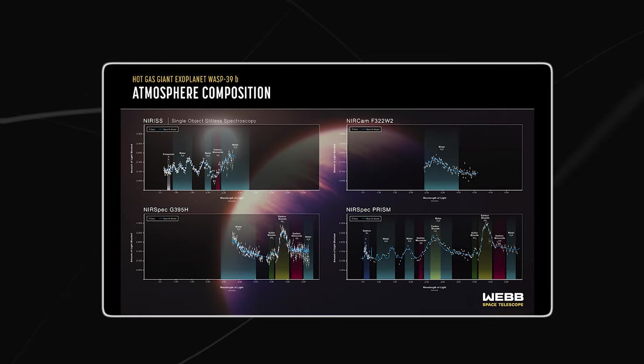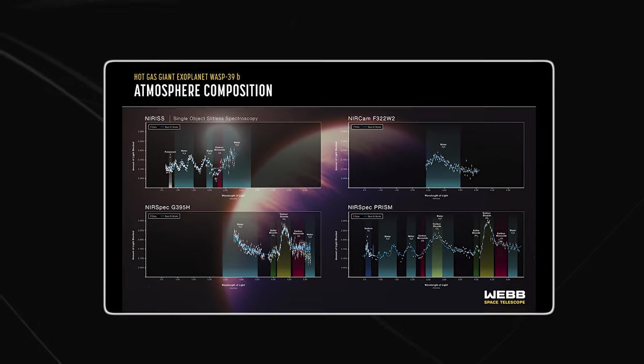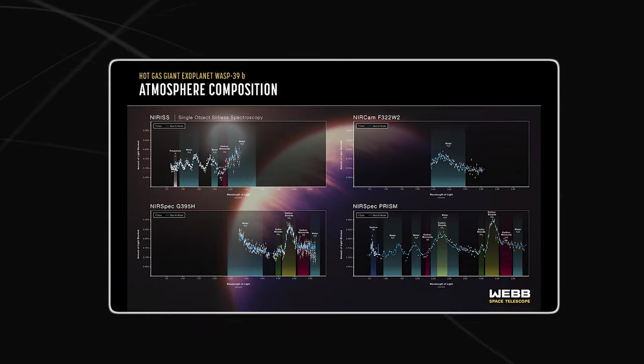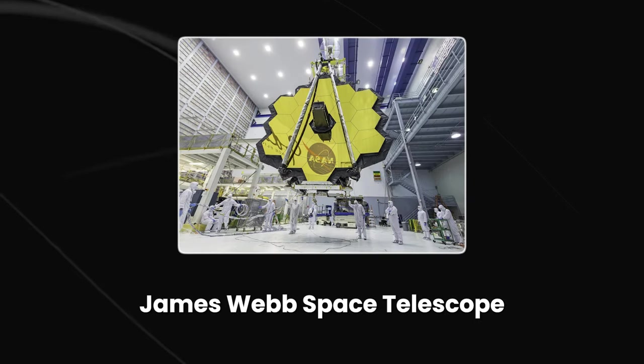AI is also being used to process large amounts of data from ground-based telescopes and space-based telescopes, such as the James Webb Space Telescope. Number five: detection and analysis of gravitational waves.